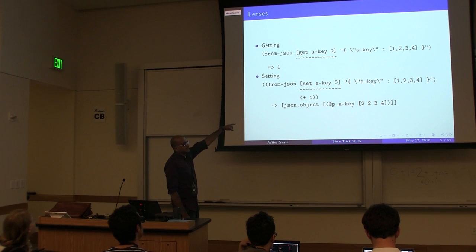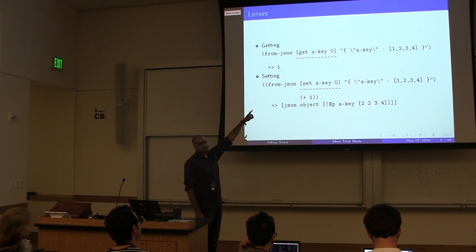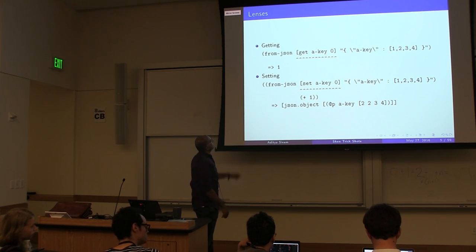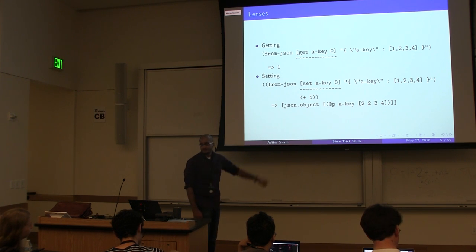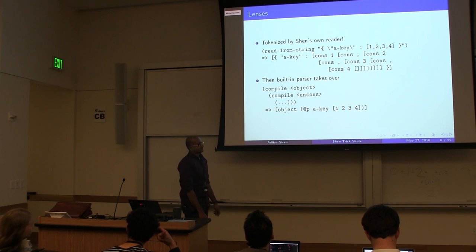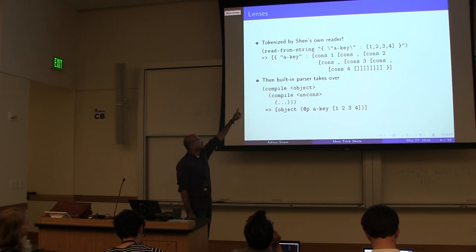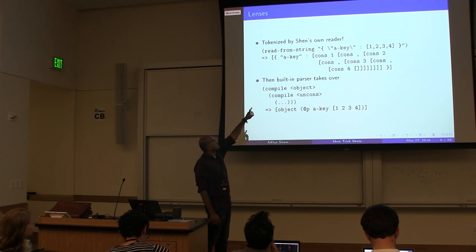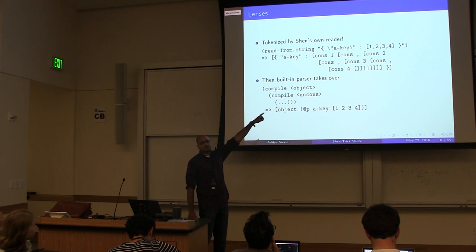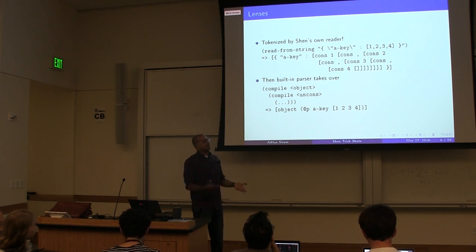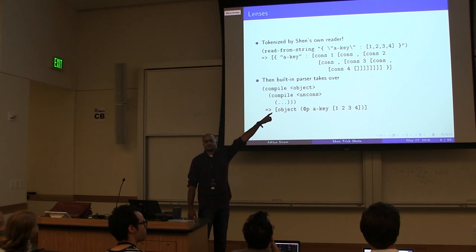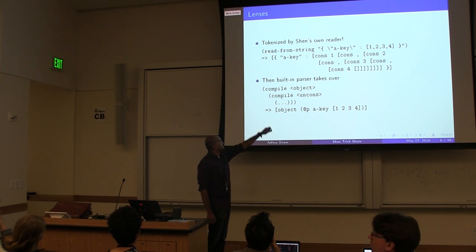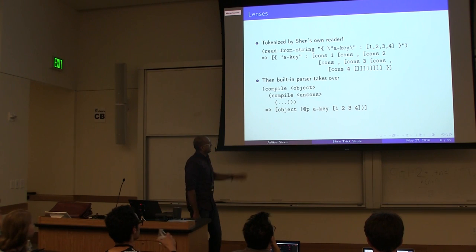Here's what we're going to get at the end: a function called funJSON. It takes a weird grammar — either get or set, some key, and some array index — meaning drill down into a key, then drill down into the zeroth element of that array, and either get it or add one to it. For reading JSON from a string, I used Shen's own reader. It's good enough to tokenize most of it. The left curly brace is a symbol to Shen, strings parse fine, but once you get to a list with commas and numbers, it doesn't quite know what to do — it gives back a cons list where it thinks one is a symbol. All that needs to be cleaned up. What we'll get is a list with 'object' at the head and a list of key-value pairs.